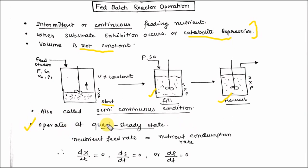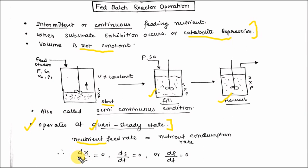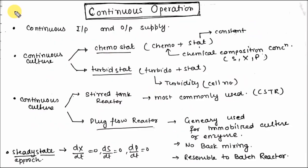A very important condition in fed batch operation is quasi steady state — you must remember this. At quasi steady state, nutrient feed rate equals nutrient consumption rate. At this state: the change in biomass concentration dx/dt equals zero, change in substrate concentration ds/dt equals zero, and change in product concentration dp/dt equals zero.